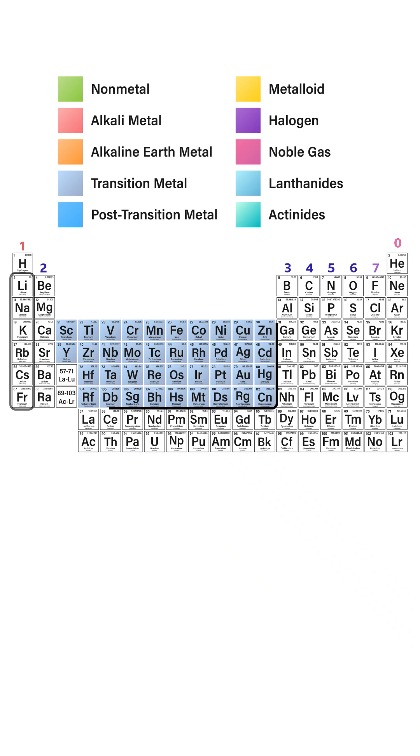You'll see that between group two and group three, there's a gap, where there's a block of elements with similar properties, and these are called transition metals.